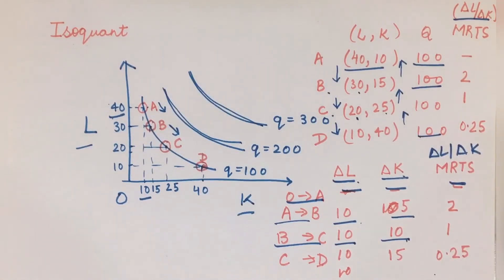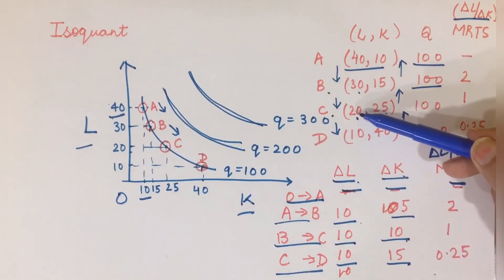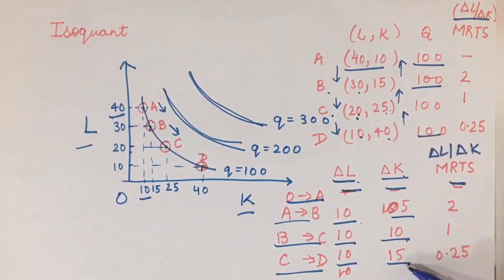Now I'm moving from C to D. When I'm moving from C to D, my change in L is 10 and my change in K is 15. If you don't understand how I got these, look at these terms - the change in L is 20 to 10, that is 10; change in K is 25 to 40, that is 15. All I'm doing is taking a ratio of ΔL upon ΔK, and it gives us the MRTS.